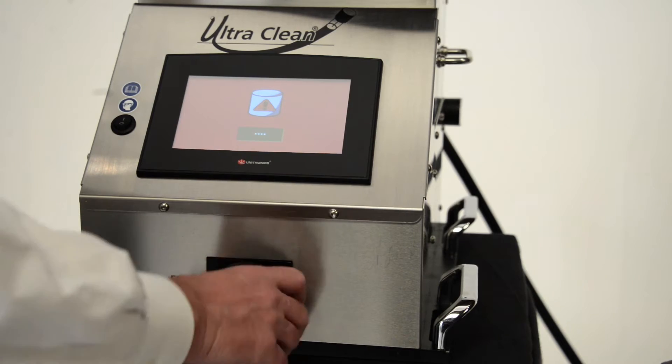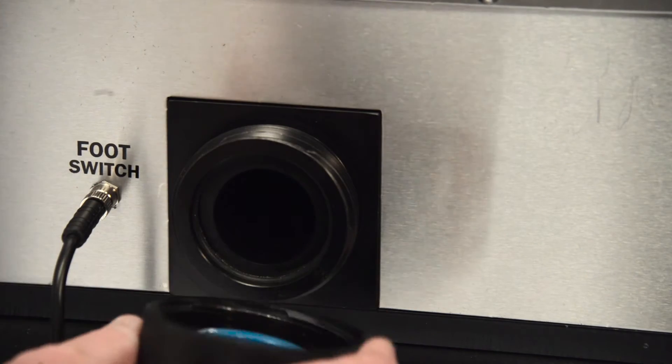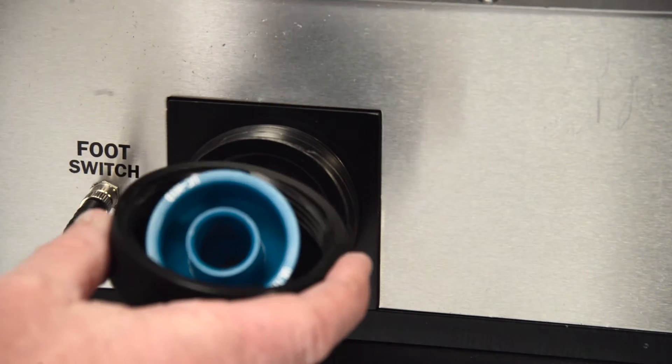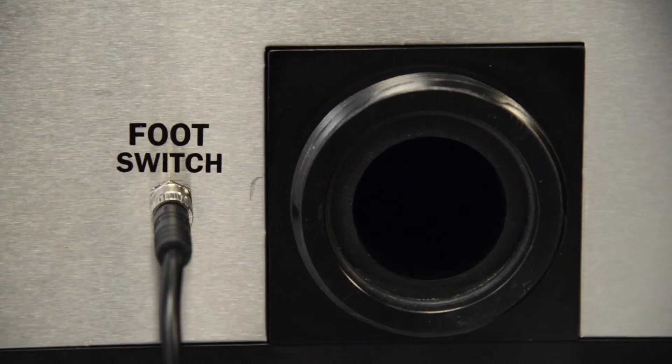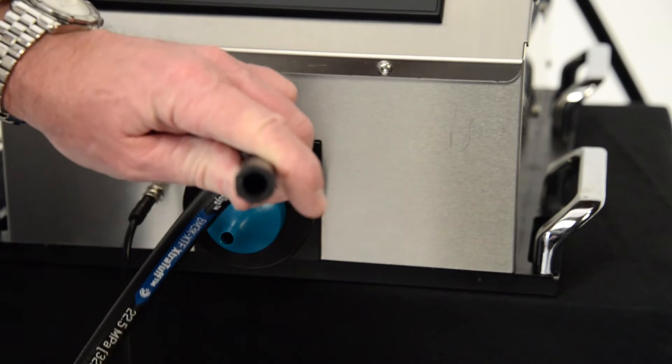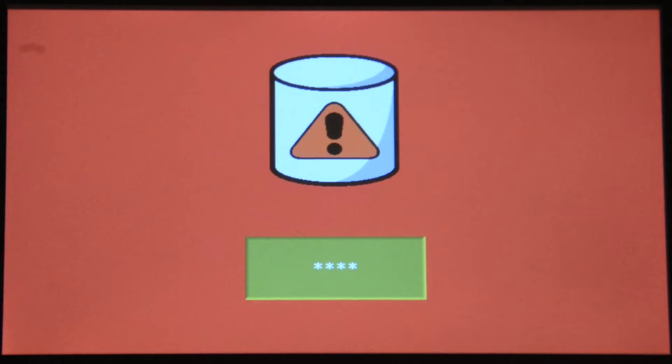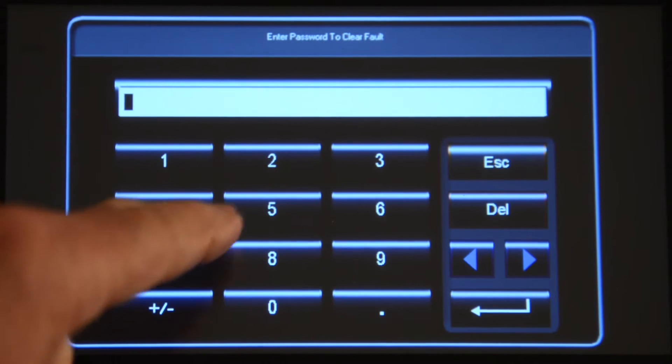Before clearing the fault, the misfired projectile should be located. Visually inspect inside the nozzle, firing chamber, or in each end of the hose or tube. After locating the misfired projectile, follow the fault screen instructions and enter the password when prompted.